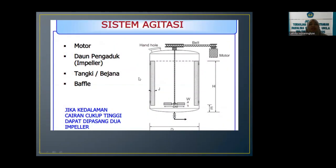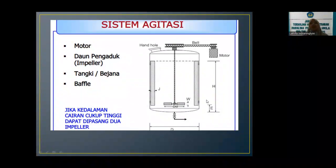Sistem agitasi terdiri dari beberapa bagian. Yang pertama harus ada motor sebagai penggeraknya, di mana nanti ini bisa digabungkan dengan semacam belt atau rantai. Lalu nanti akan ada daun pengaduknya—daun pengaduk ini beragam, adik-adik, nanti saya akan contohkan tipe-tipe daun pengaduk atau bilah pengaduk atau impeller yang fungsinya akan berbeda-beda tergantung dari bahan yang mau kita campurkan. Lalu ada tangki atau bejananya, biasanya juga terdapat baffle atau semacam penyangga di dinding dari tangkinya.